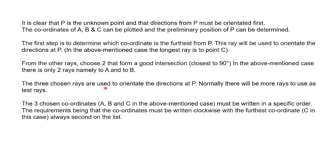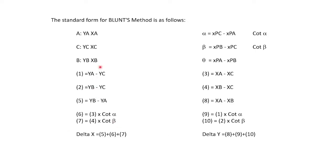The three chosen rays are used to orientate the direction at P. This is very similar to what we do in the Q-Point method. The three chosen coordinates must be written in specific order. Requirements being the coordinates must be written clockwise with the furthest coordinate, C in this case, always being second on the list.